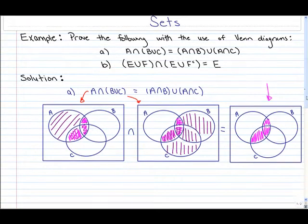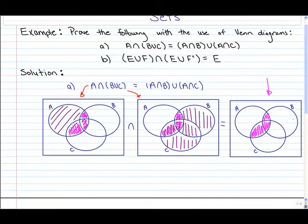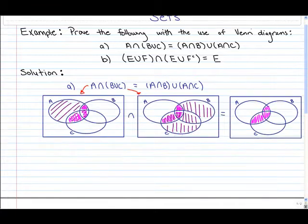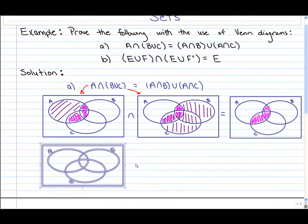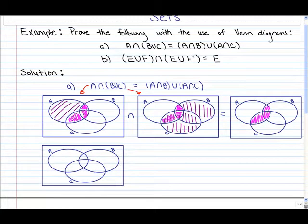Now we want to show that the right hand side of the equation gives us the exact same answer — the same shaded Venn diagram. The first thing to show on the right hand side is A intersect B. A intersect B is simply this region shaded in — what's in common with both A and B.